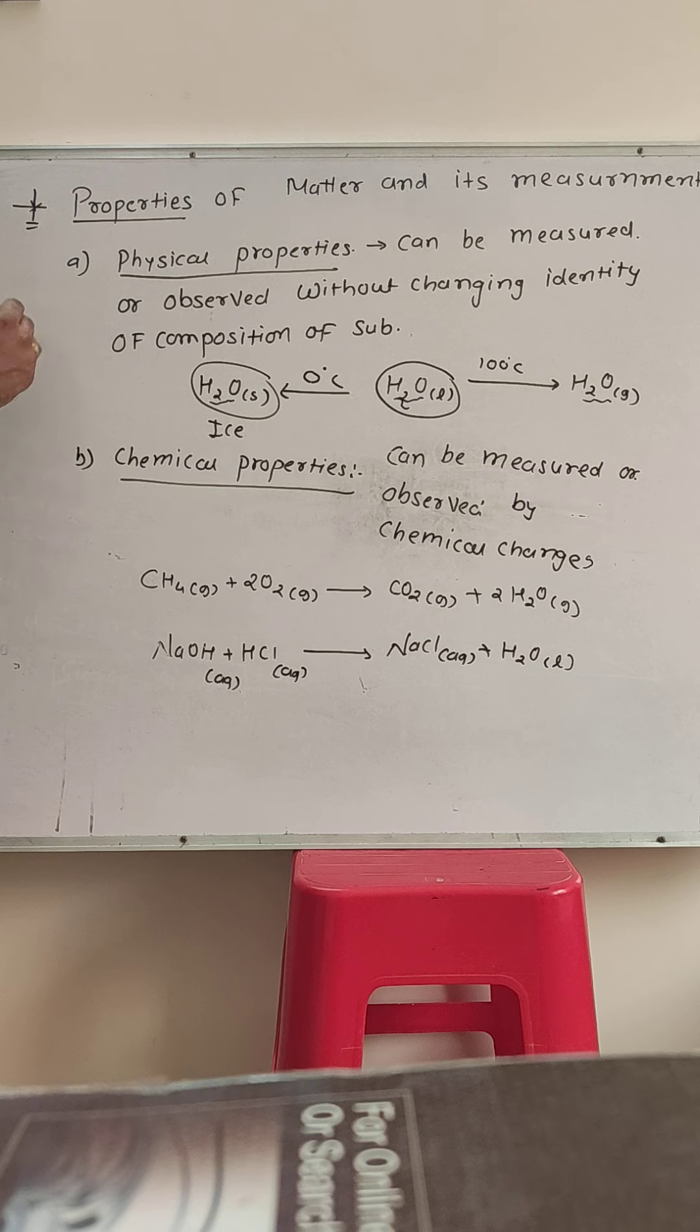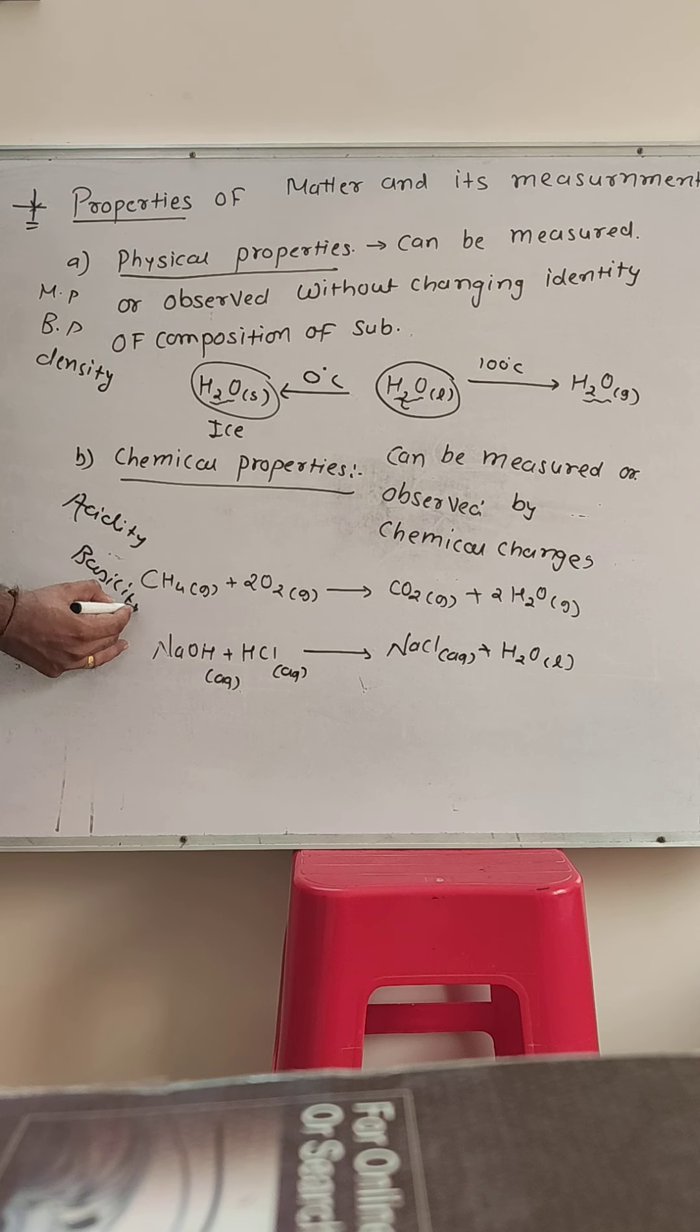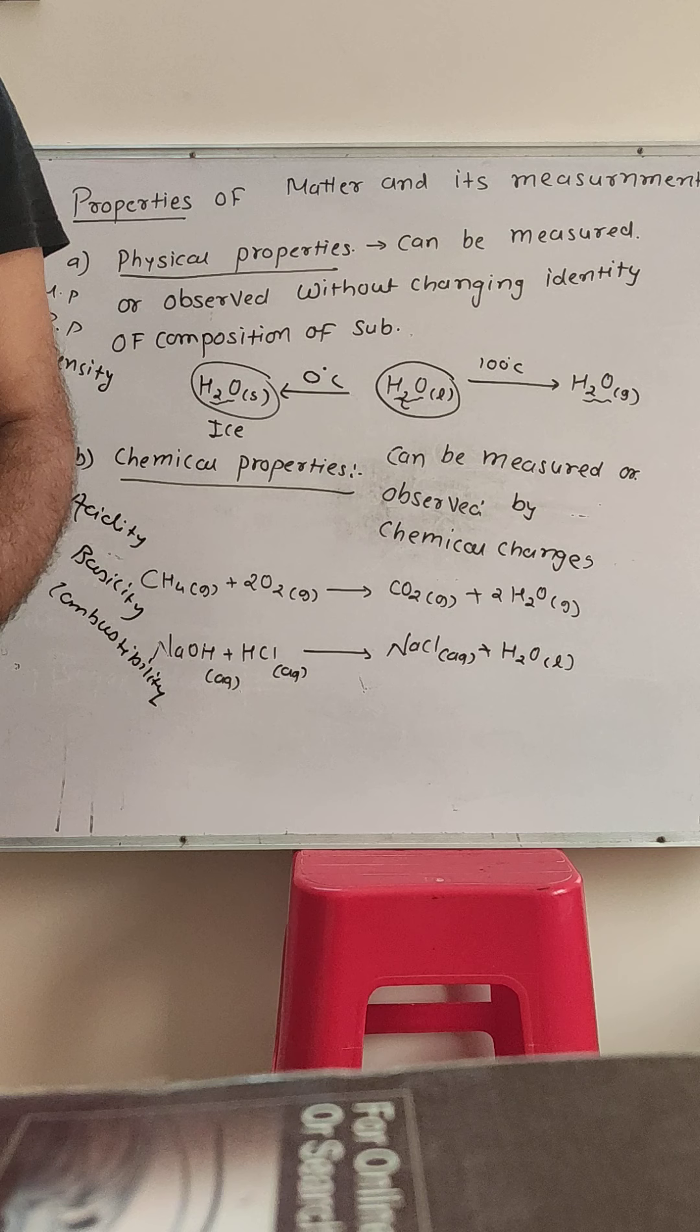For physical properties, examples include melting point, boiling point, and density. For chemical properties, examples include acidity, basicity, combustibility, and reactions with acids and bases, reaction with carbonates, etc. There are many reactions.